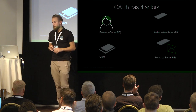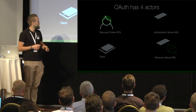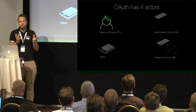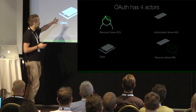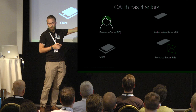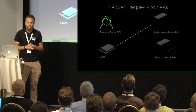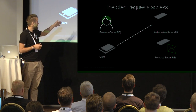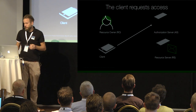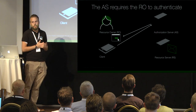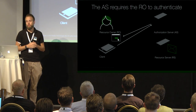Let's say the resource server is a mail server - Gmail or some other mail server. Some developer wrote an app that sorts my emails differently or lets me know that some email needs urgent attention. The app needs access to my email account on my email server. The first thing that happens is the client requests access to the resource server by calling the authorization server. The authorization server says you can have access if the user authenticates.